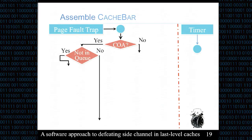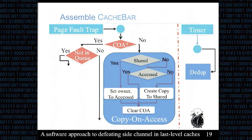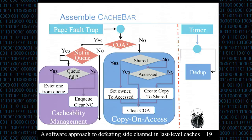Since we designed two mechanisms separately, we assemble them together in CacheBars to provide full protection against both Flush+Reload and Prime+Probe. The main components include the page trap handler and timer daemons. For copy-on-access, we implement a logic diagram based on state transitions plus a timer daemon to deduplicate copies. For cacheability management, we add another timer daemon to perform LRU sorting.